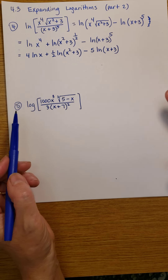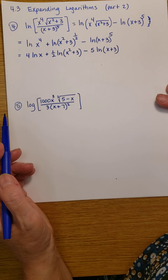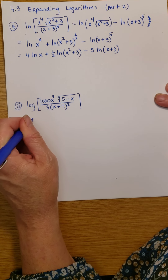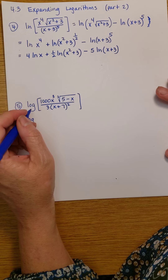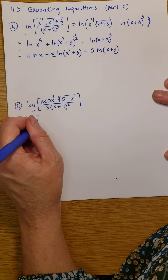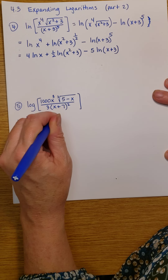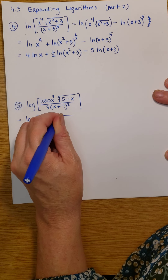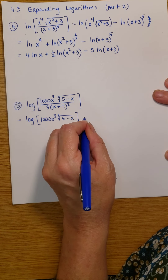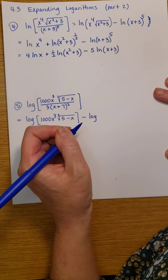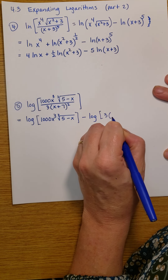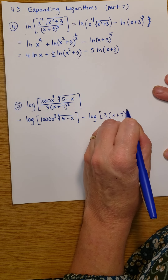So we just have to leave it like this. Now in our next problem we have, again, a quotient. So I'm going to expand that as a difference. The numerator — I'm taking the log of the numerator, which is 1,000 x cubed times the cube root of 5 minus x — and I'm going to subtract from that the log of the denominator, which is 3 times x plus 7 squared.